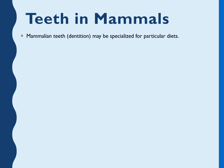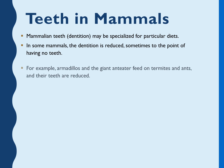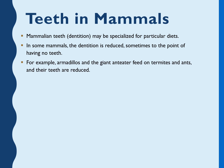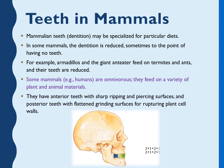Mammalian teeth may be specialized for a particular diet. In some mammals, dentition is reduced — for example, armadillos and giant anteaters that feed on termites and ants have reduced or no teeth. Some mammals feed on a variety of plant and animal material, so they have anterior teeth with sharp ripping and piercing surfaces, and posterior teeth with flattened grinding surfaces for rupturing plant cell walls.